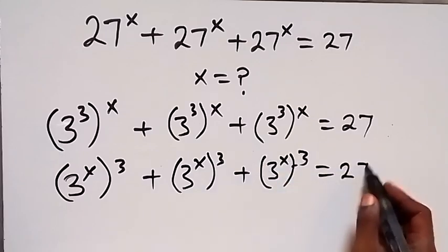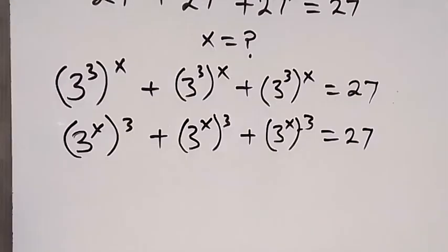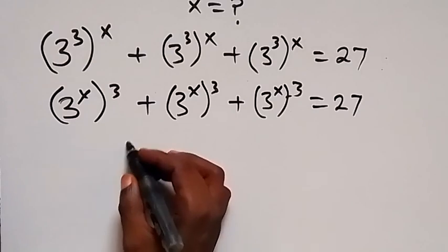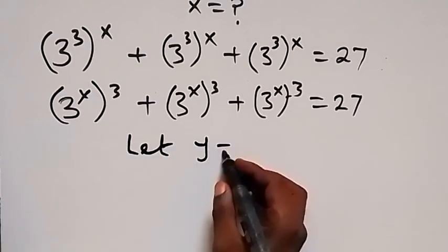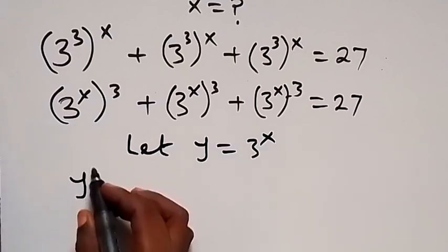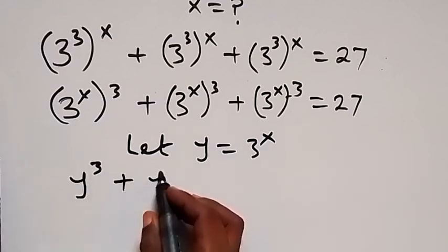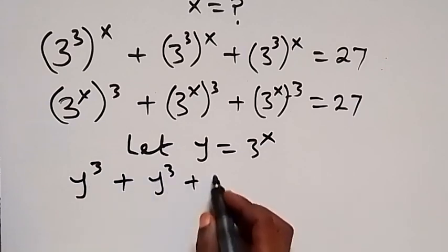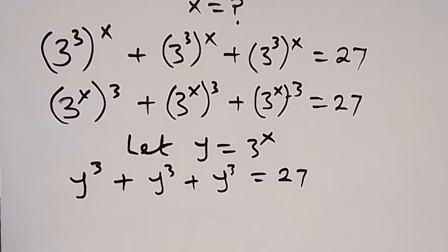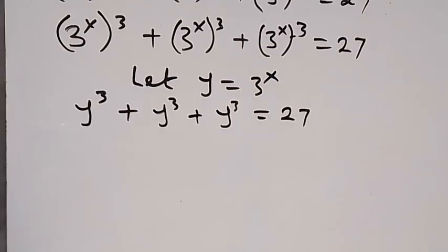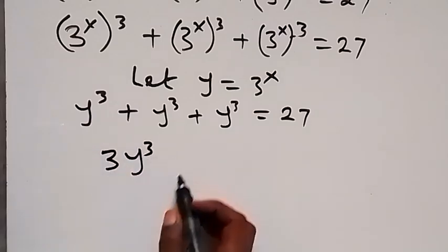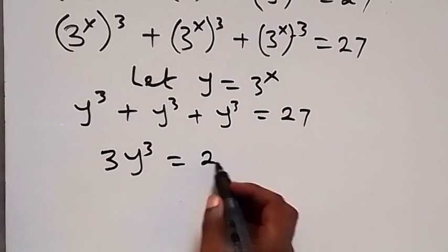This equals 27. Here we have 3 raised to power x. Let y be equal to 3 raised to power x, such that we get y raised to power 3, plus y raised to power 3, plus y raised to power 3, equals 27. We can write this as 3y raised to power 3 equals 27.